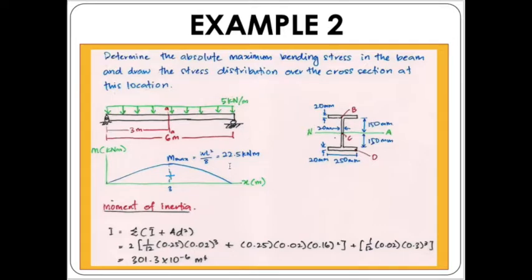The cross section of this beam is given on the right, where we have an I-beam — similar to Example 1, only with different dimensions. However, it is still a symmetrical beam, symmetrical in both the horizontal and vertical directions.